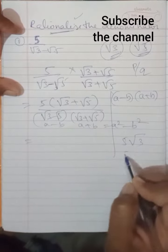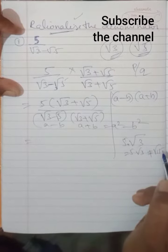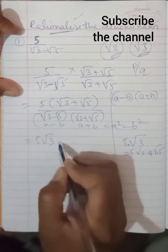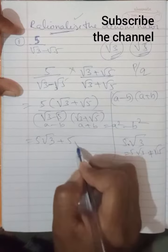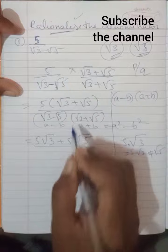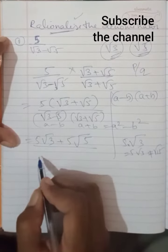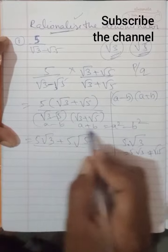Now look at this: 5 into root 3 is 5 root 3. It is not equal to root 15. This is 5 root 3, you are keeping it as is, plus 5 into root 5 is 5 root 5 only. Once again, you are not multiplying this one, multiplying 5 into 5. This is what mistake most students make.